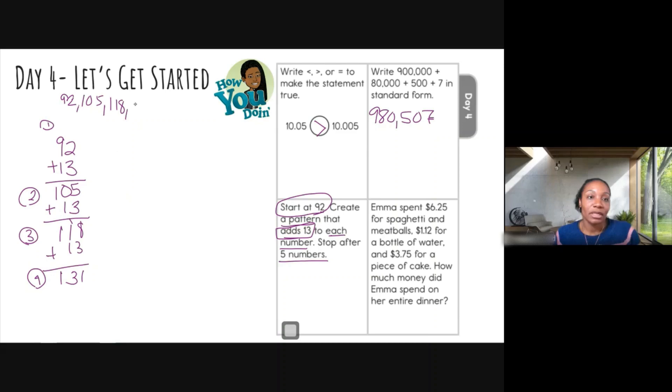I'm almost done. This is a lot of work, but it's so worth it to get the correct answer. We're going to add 13 one more time. And this is going to be my fifth number. So three plus one is four, three plus one again is four and one plus zero is one. So my fifth number is 144. It's a lot of work. So this is your answer. We have 92, 105, 118, 131, and 144. Last question of the day.